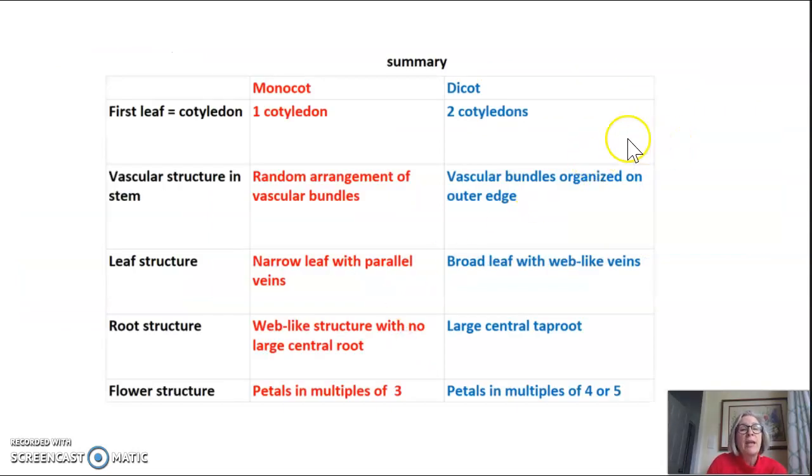So in summary the differences between monocots and dicots which are two types of angiosperm are in their first leaf or cotyledons. They have a different vascular system. It's random in the monocot and it's organized like a wagon wheel in the dicot. The leaf structure in the monocot is very narrow with parallel veins. In the dicot it's a broad leaf with web-like veins. The root structure in a monocot is a web-like structure with no large central root. The root structure in a dicot has a large central tap root. The flower structure in a monocot the petals are in multiples of three and in a dicot those petals are in multiples of four or five.